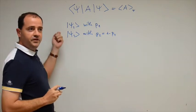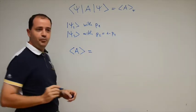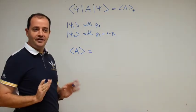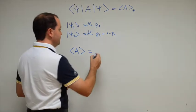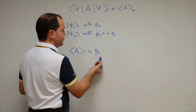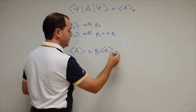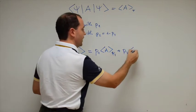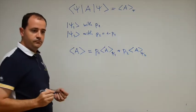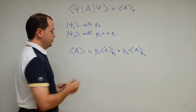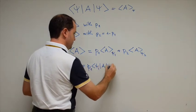For such a source, what would be the average value of the operator A? You can pause the video and think for a couple of seconds. The answer is obviously: with frequency P1 we will see the average due to state Psi1, and with frequency P2 we see the average due to state Psi2. Written explicitly, it looks like that.